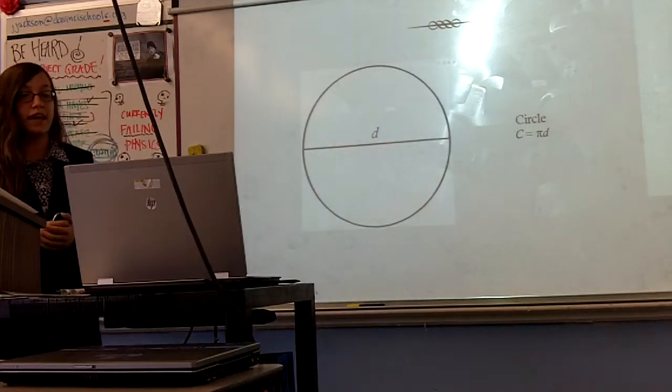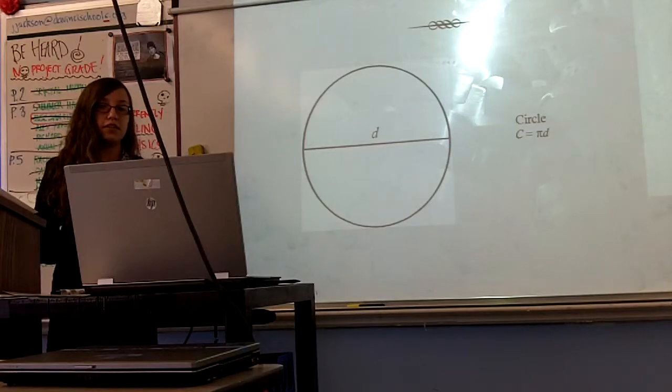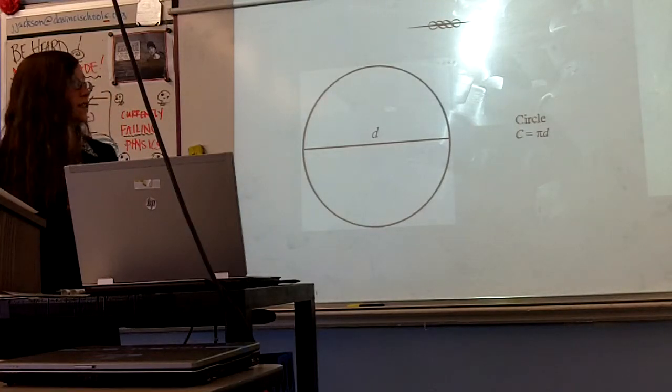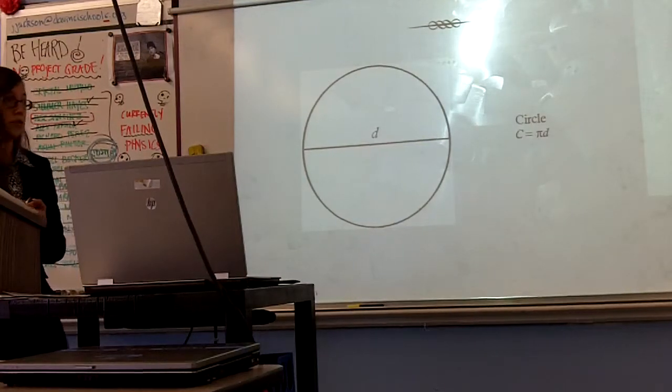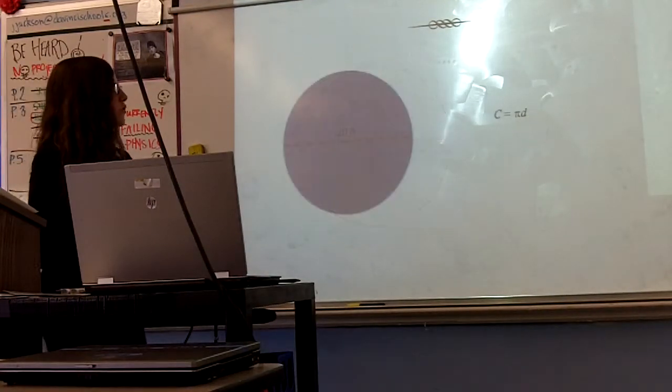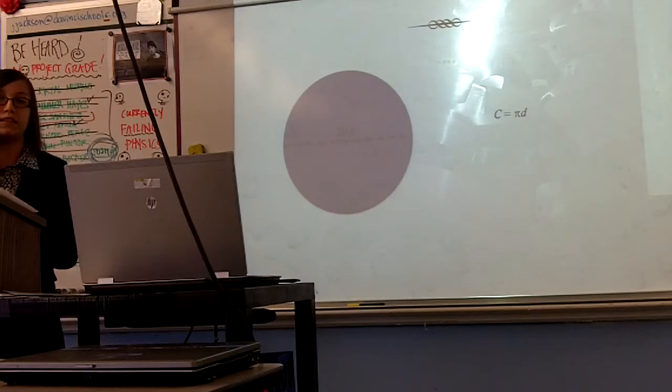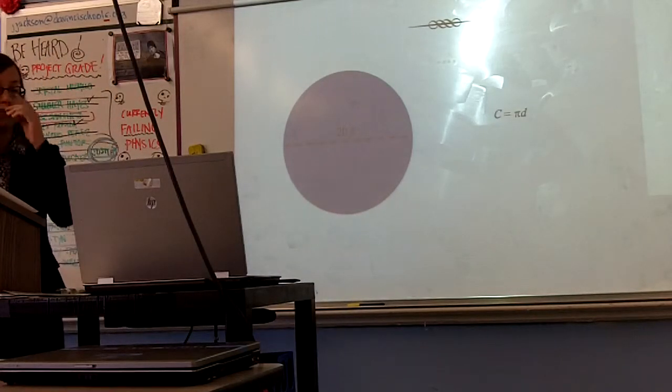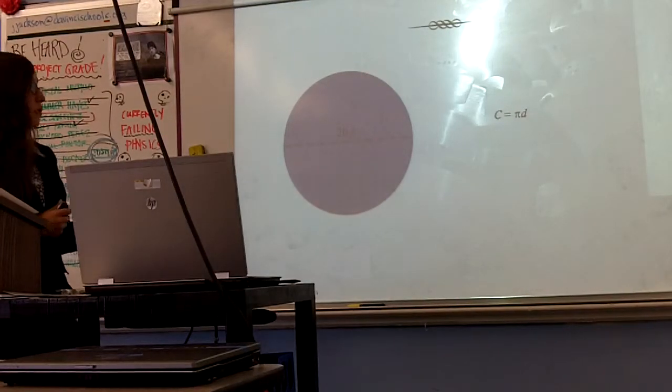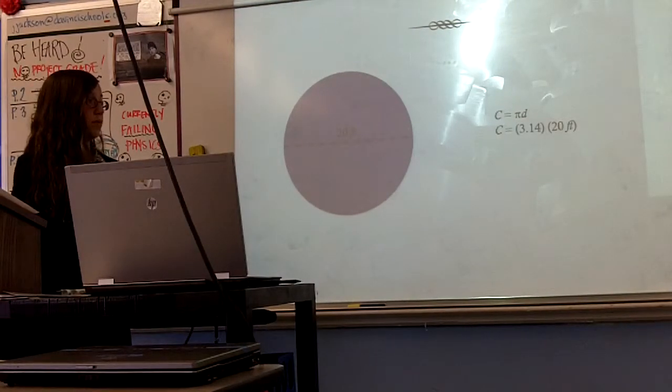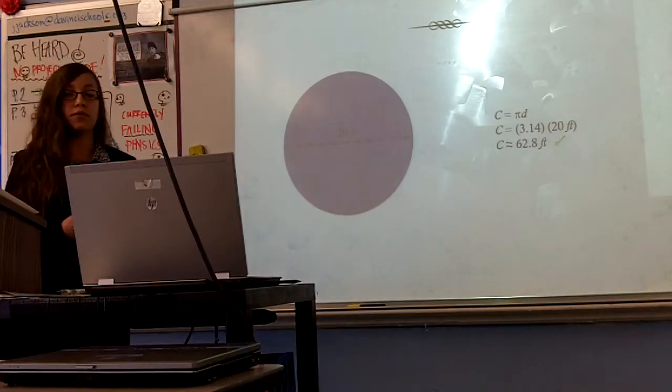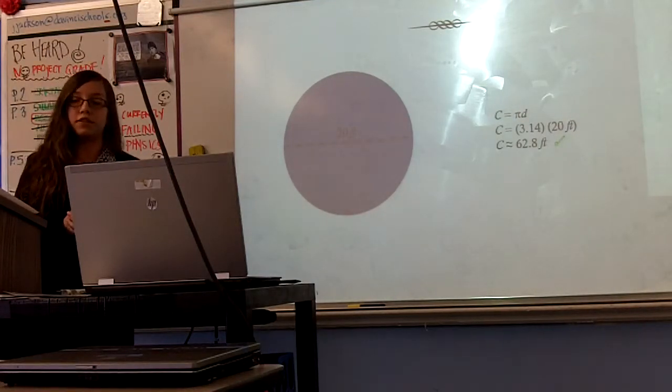Now circumference is only used with circles. Since a circle is completely round and has no straight edges, the regular rules of perimeter don't apply, and so we have to use this equation. The equation for circumference is C equals pi D, where C is the circumference of the circle and D is the diameter or distance across the circle. If our diameter is 20 feet and we multiply 20 feet by 3.14, we get 62.8 feet. Like perimeter, circumference is one-dimensional and does not need to be squared.